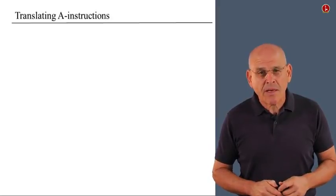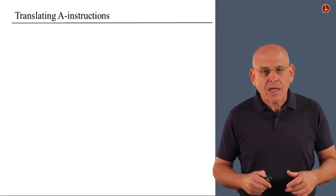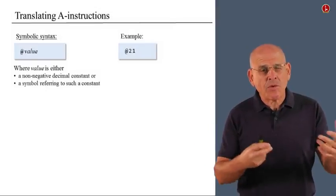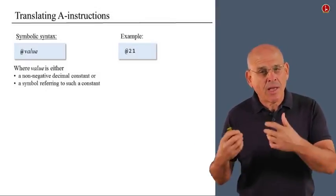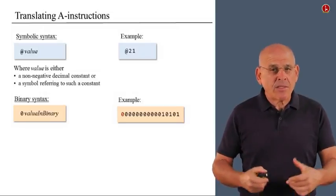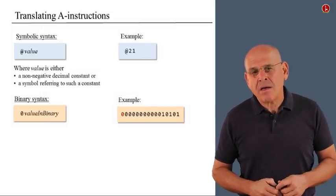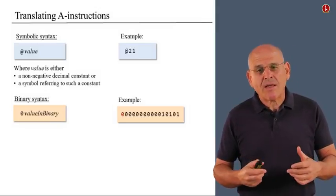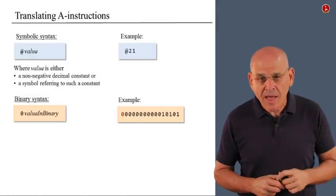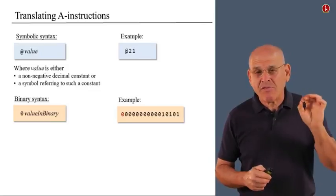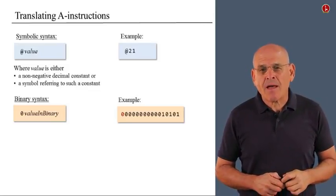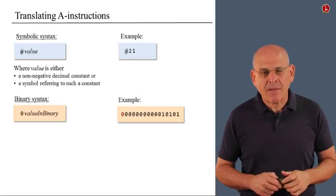So, let us begin with A instructions. Here is the general rule and the syntax rule of how to put together an A instruction and an example, and here is the same instruction expressed in binary code. Notice that the op code of an A instruction is zero. This is the first red zero bit that you see in the example at the bottom right.